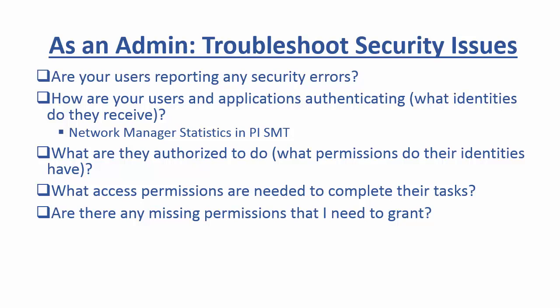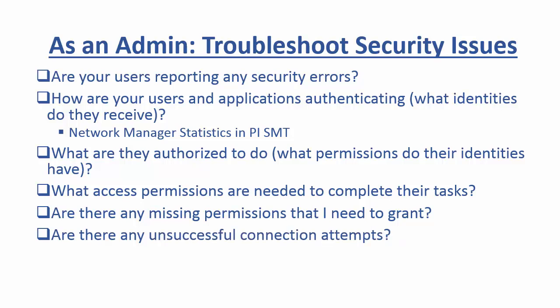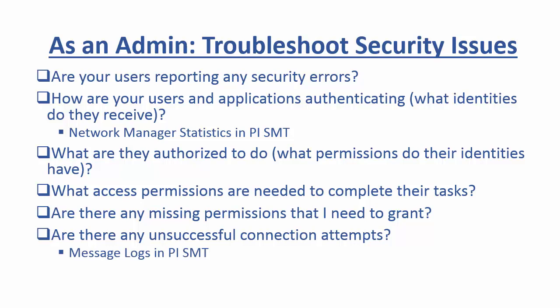All these steps are really great if a user or application is able to make some sort of connection. But what about the case of unsuccessful connections? We need to make sure to look for any unsuccessful connection attempts and determine whether or not we need to set up security to grant these connections the ability to authenticate on our data archive. I'll show you how to do this with the message logs in PI System Management Tools.